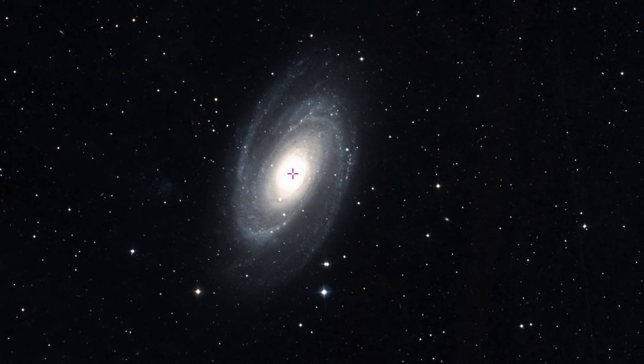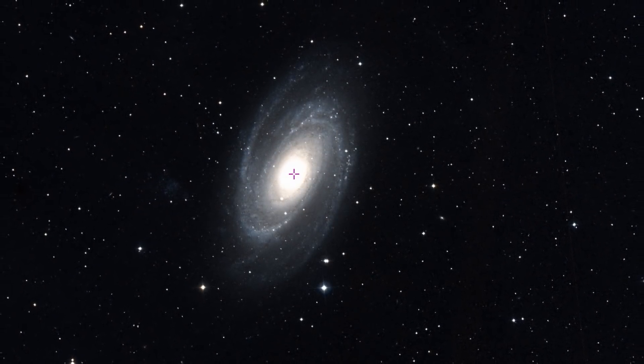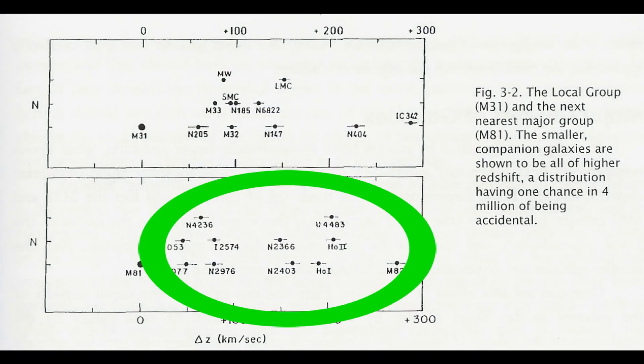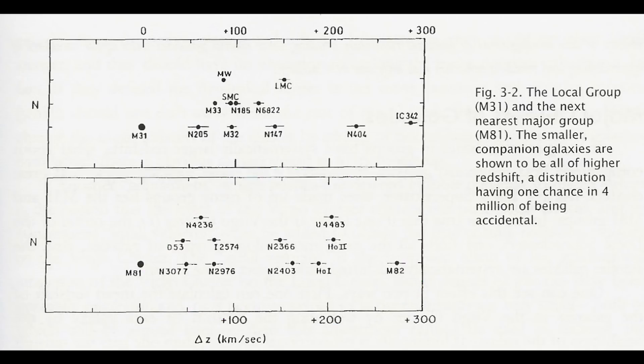The next nearest group to us, M81 group, is also centered on a massive spiral barred galaxy and once more every major companion is redshifted with respect to it. So would this effect also be visible on larger scales of superclusters?